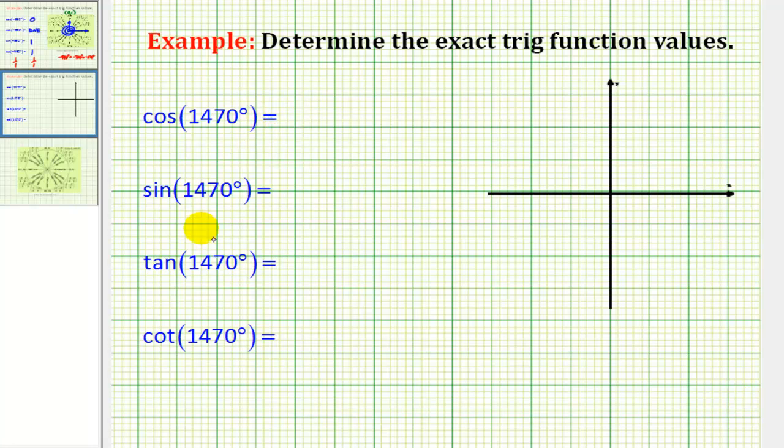In this example, we want to determine the exact trig function values for 1,470 degrees. And there are two main ways of doing this. We can use a unit circle or we can use reference triangles.